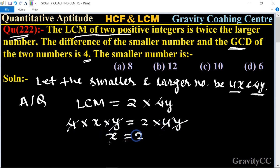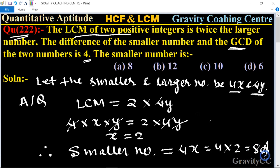Therefore the smaller number is equal to 4x, so is equal to 4 into 2, equal to 8, which is the required answer. So option a is the correct answer.